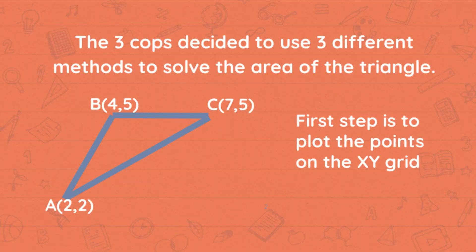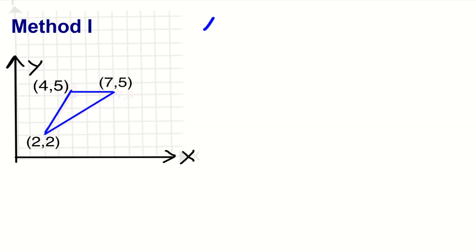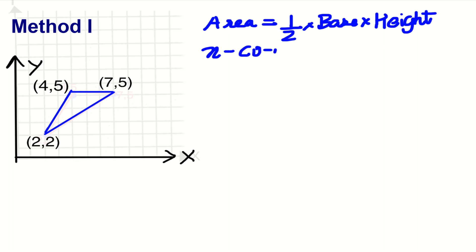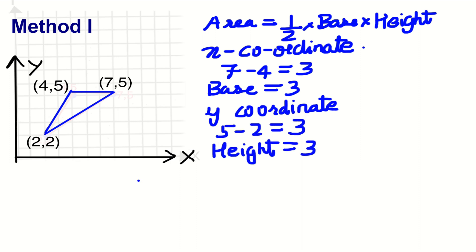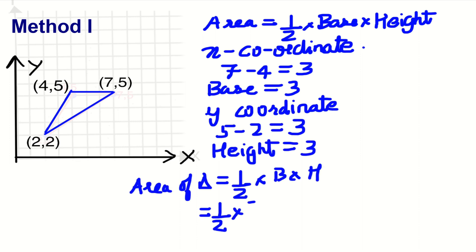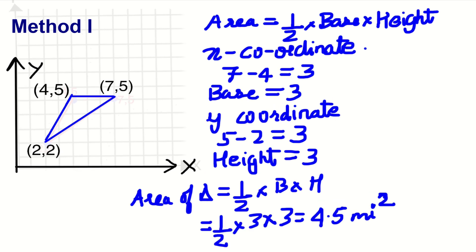The three cars decided to use three different methods to find the area of the triangle. Area equals one-half base times height. To find the base, we will do 7 minus 4 which equals 3, so the base is 3. 3 times 3 equals 9, and 9 divided by 2 equals 4.5, so the area of the triangle is 4.5 miles squared.